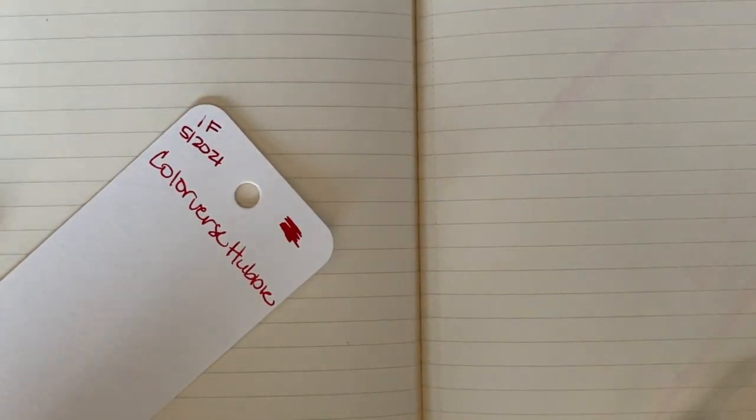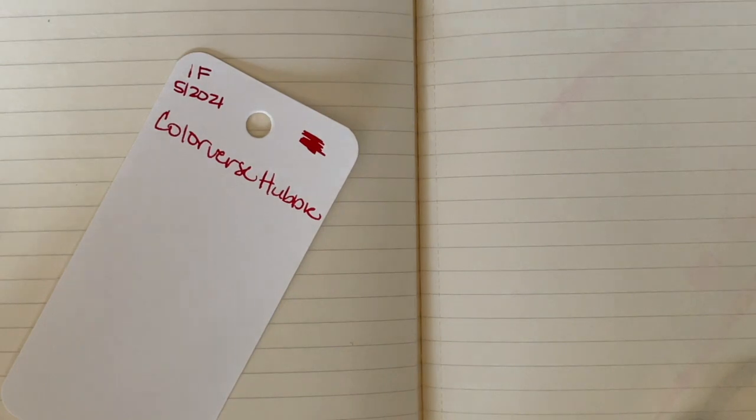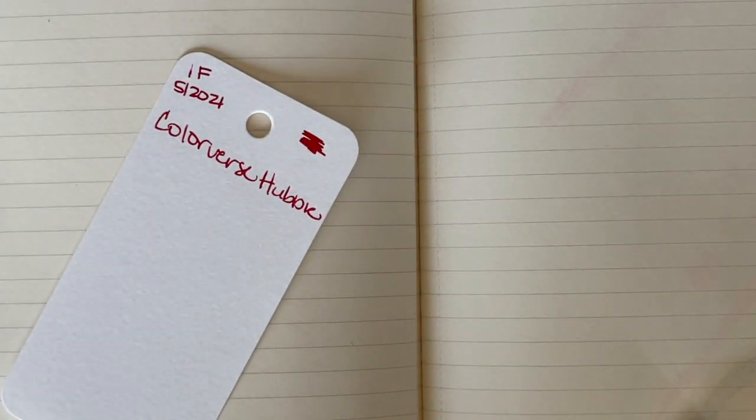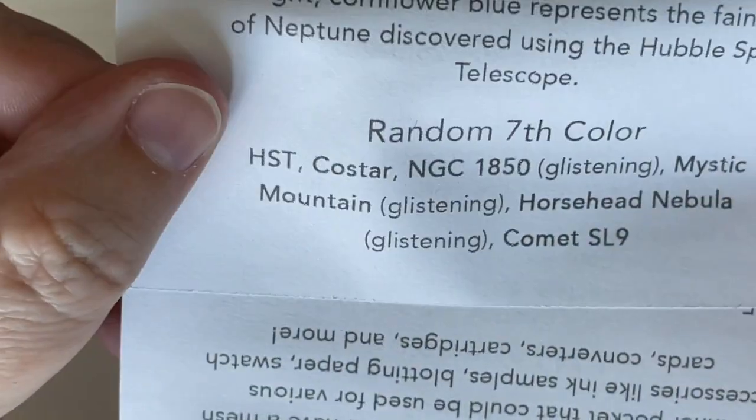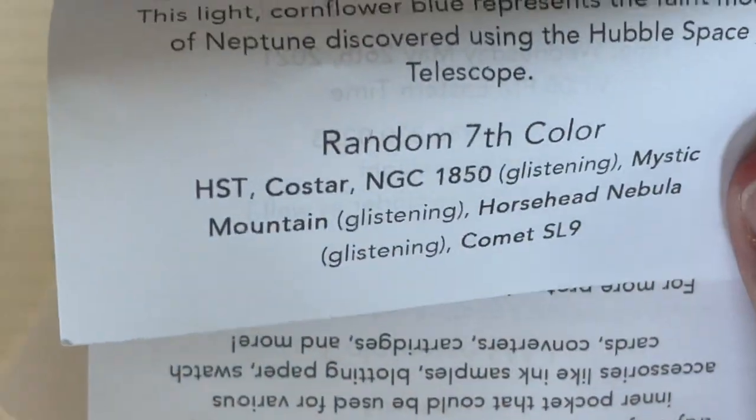One thing that I'm not gonna do is I'm not gonna do comparisons in this video because I did a big feature-length video showing these inks already. So what I will do is, in the cards, I will link to my original video, because I did all that work already and I don't really feel like doing it twice. So, if you're interested, I'll link that. I also featured a couple of the inks. Not any of the ones that I have received here, but some of the random seventh color ones. Specifically, Mystic Mountain and Horsehead Nebula.